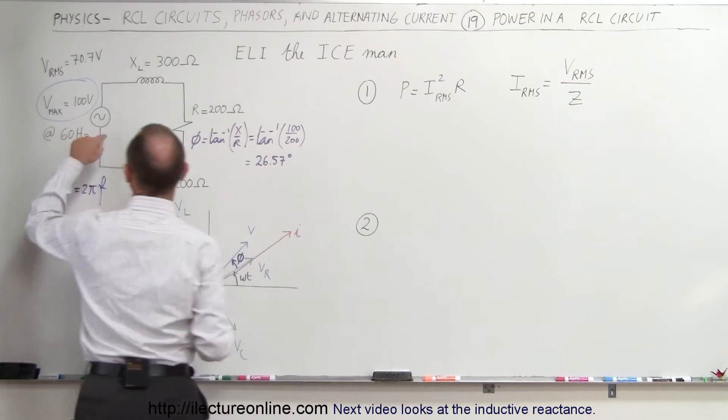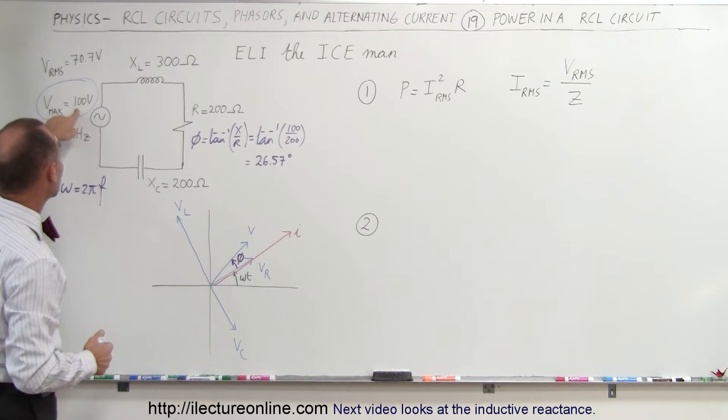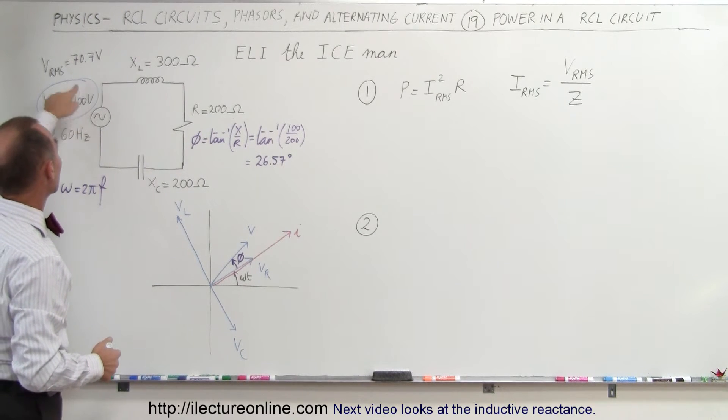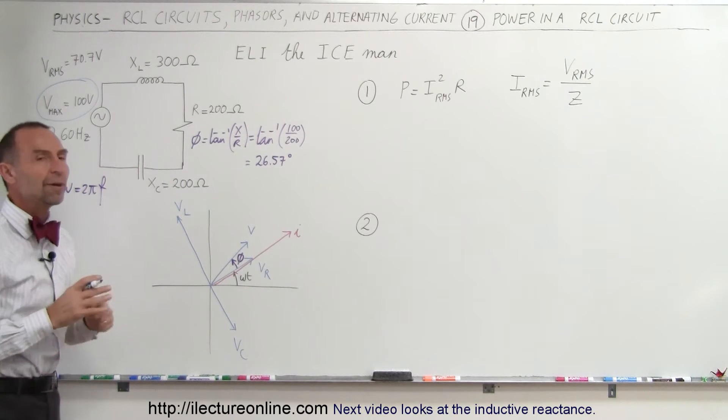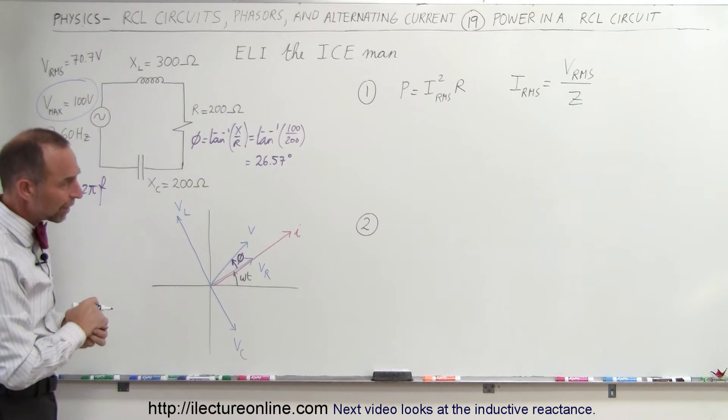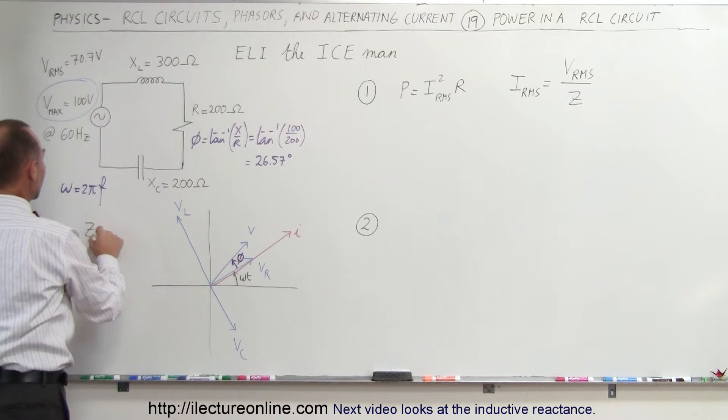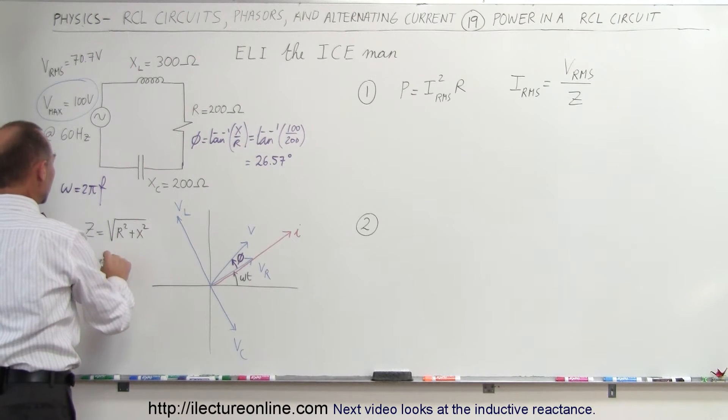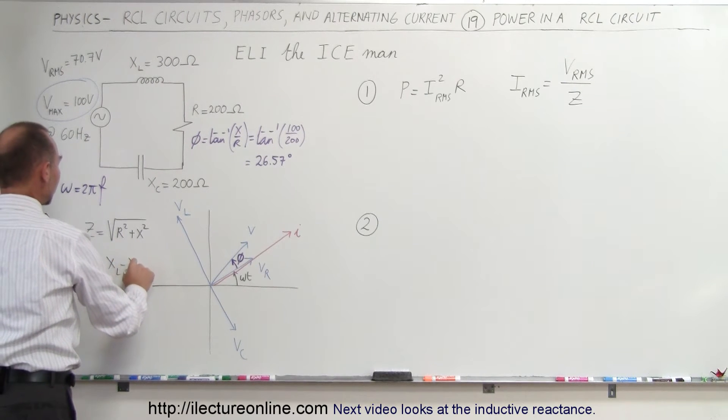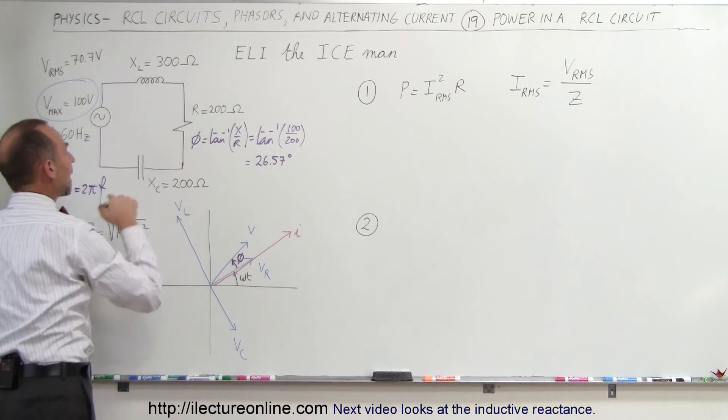IRMS in an RCL circuit is equal to the voltage RMS divided by the impedance. The voltage RMS, if you have an oscillating voltage supply, let's say there's a maximum voltage of 100 volts, we then take the voltage, 100 volts, multiply times the cosine of 45 degrees, or 0.707, that gives us RMS voltage. So the RMS voltage divided by the impedance. The impedance is equal to the square root of the resistance squared plus the reactance squared, of course, knowing that the reactance is equal to X sub L minus X sub C, the difference between the reactance of the inductor and the reactance of the capacitor.